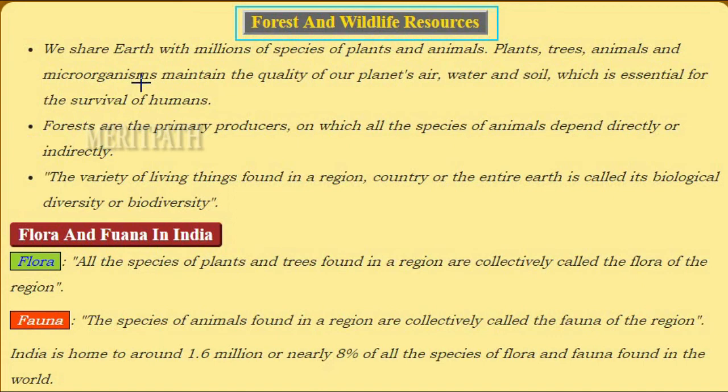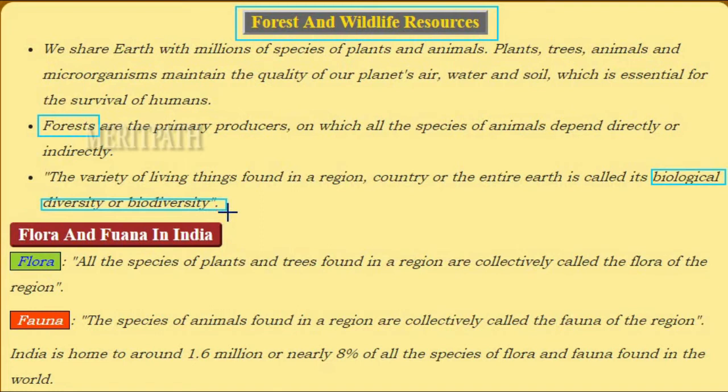Forest and wildlife resources: trees, animals, and microorganisms maintain the quality of a planet's air, water, and soil, which is essential for human survival. Forests are the primary producers on which all animal species depend directly or indirectly. The variety of living things found in a region, country, or the entire earth is called biological diversity, or simply biodiversity.